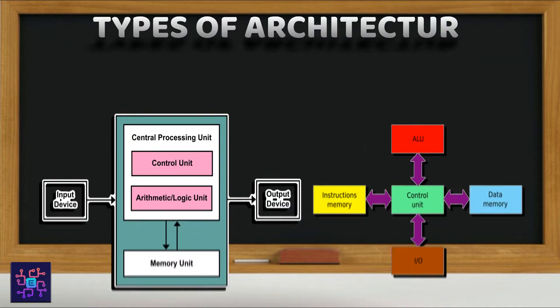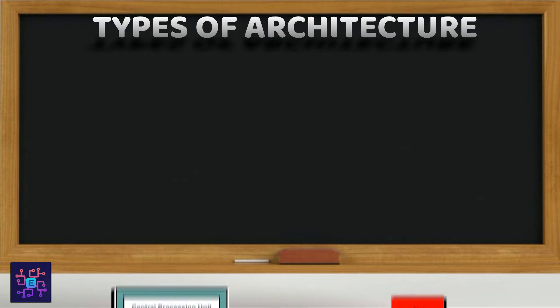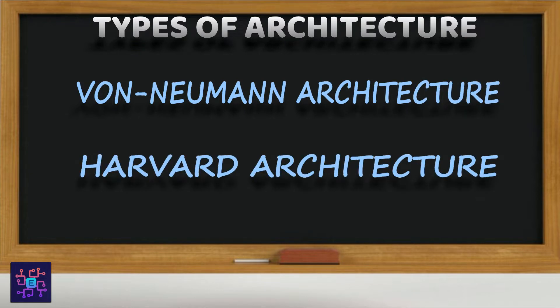There are two types of architectures used in microcontroller for accessing memory. First is the von Neumann architecture and second is the Harvard architecture. So let's get a detailed sneak peek into both.